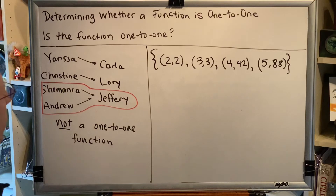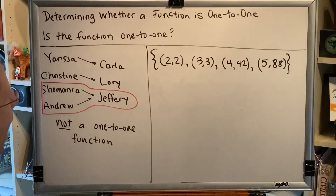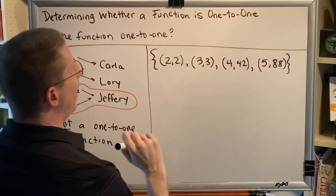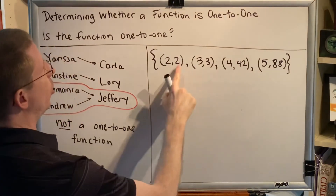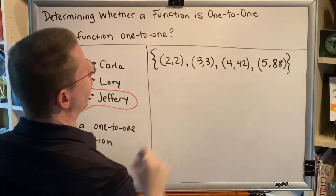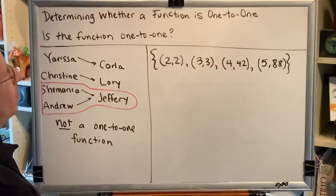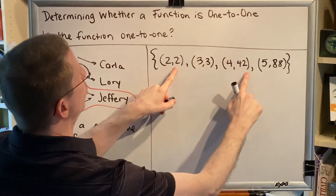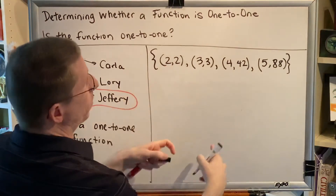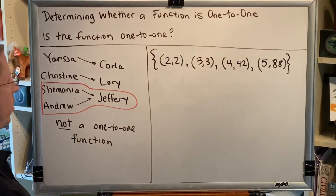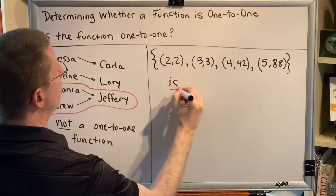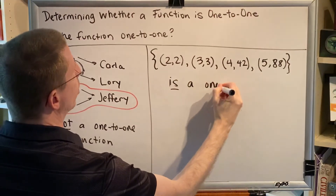Let's look at our next function. This is a collection of ordered pairs, and we notice that all of the inputs are different, and in addition, all of the outputs are different. So it doesn't matter which two different inputs you pick — it will always lead to two different outputs. And for that reason, this function is a one-to-one function.